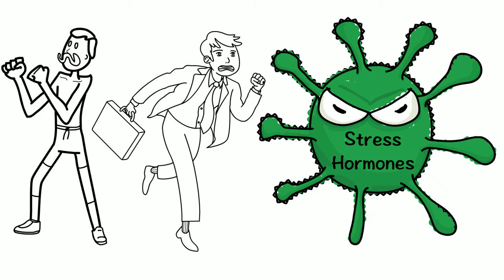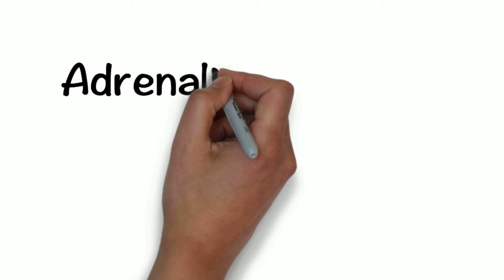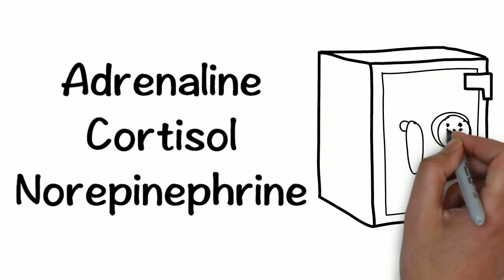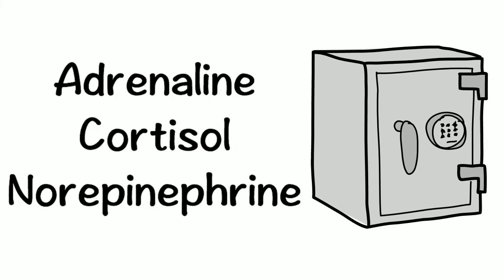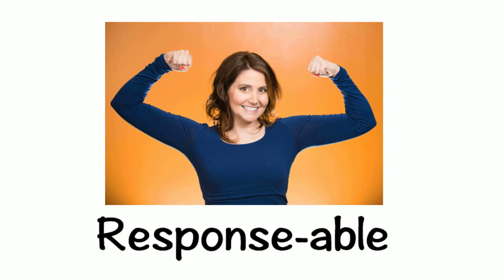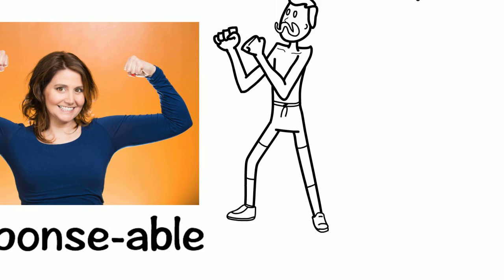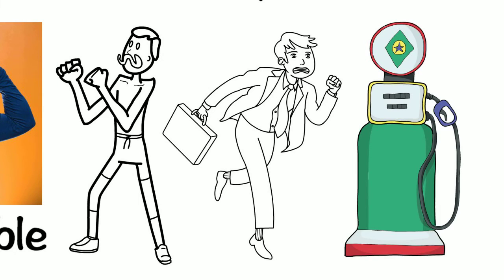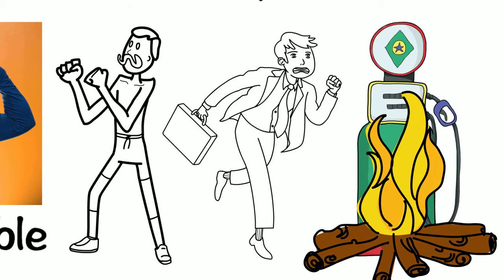These chemicals are stress hormones and are your protectors. Adrenaline, cortisol, and norepinephrine are designed to help you respond in a way to keep yourself safe. They provide you with energy to make you response-able. So, if you respond by fighting or fleeing, those stress chemicals are used as fuel for your muscles and get burned up.